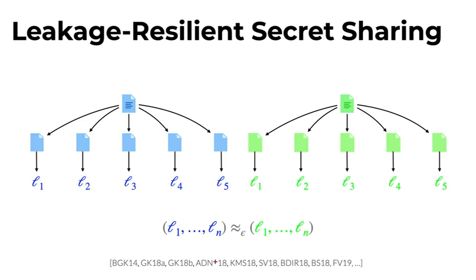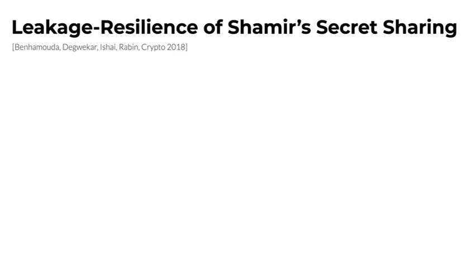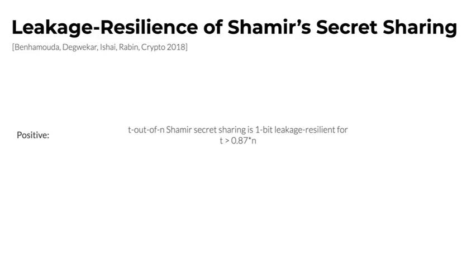Over the past few years there has been a lot of work focused on constructing more and more efficient leakage resilient secret sharing schemes for slightly different notions of leakage resilience. A somewhat orthogonal question was asked by Ben Amuda et al. at Crypto 2018: to what extent do existing popular secret sharing schemes such as Shamir secret sharing already provide leakage resilience? Interestingly, the authors showed that t-out-of-n Shamir secret sharing is one-bit leakage resilient if the reconstruction threshold is a large fraction of the total number of shares.